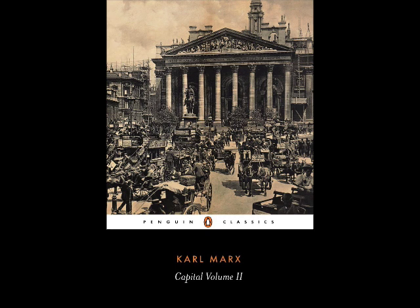The Circuit of Capital comprises three stages. As we have depicted them in Volume 1, these form the following series. First stage: the capitalist appears on the commodity and labor markets as a buyer. His money is transformed into commodities. It goes through the act of circulation M to C — money to commodity. Second stage: productive consumption by the capitalist of the commodities purchased. He functions as a capitalist producer of commodities. His capital passes through the production process. The result? Commodities of greater value than their elements of production.